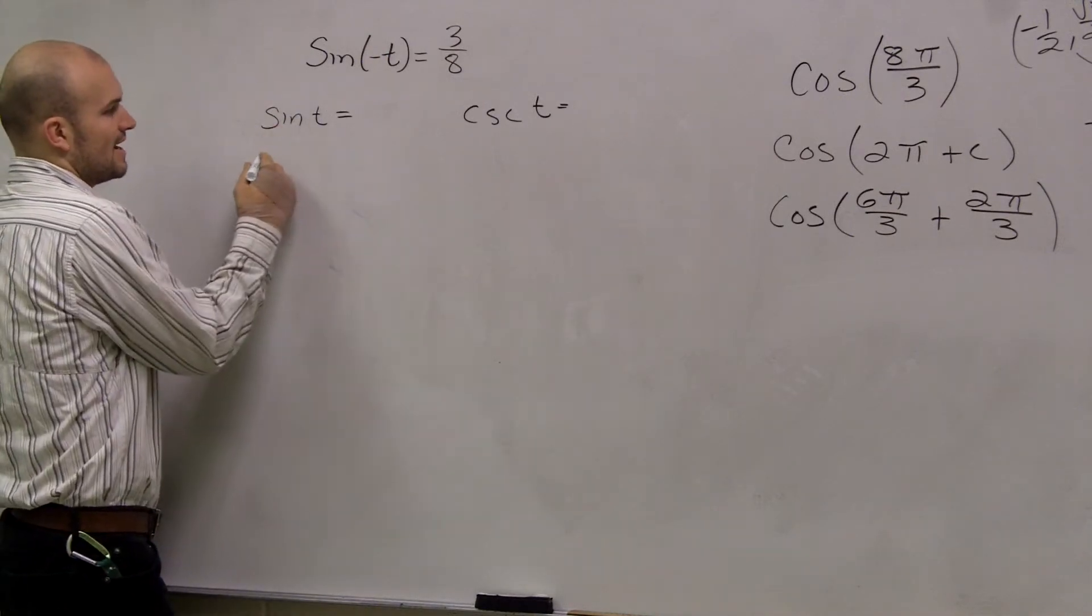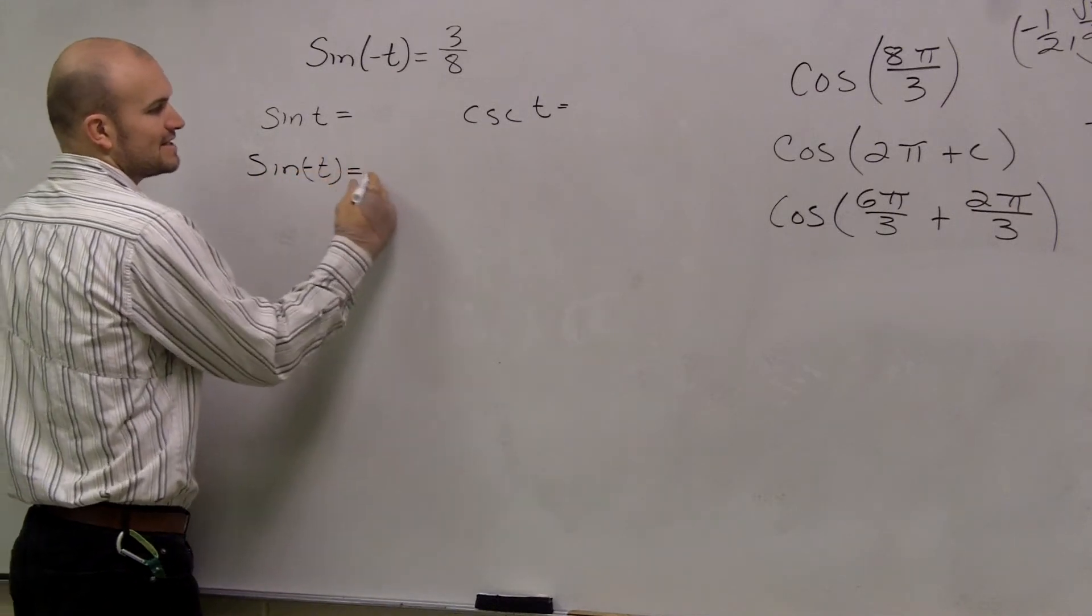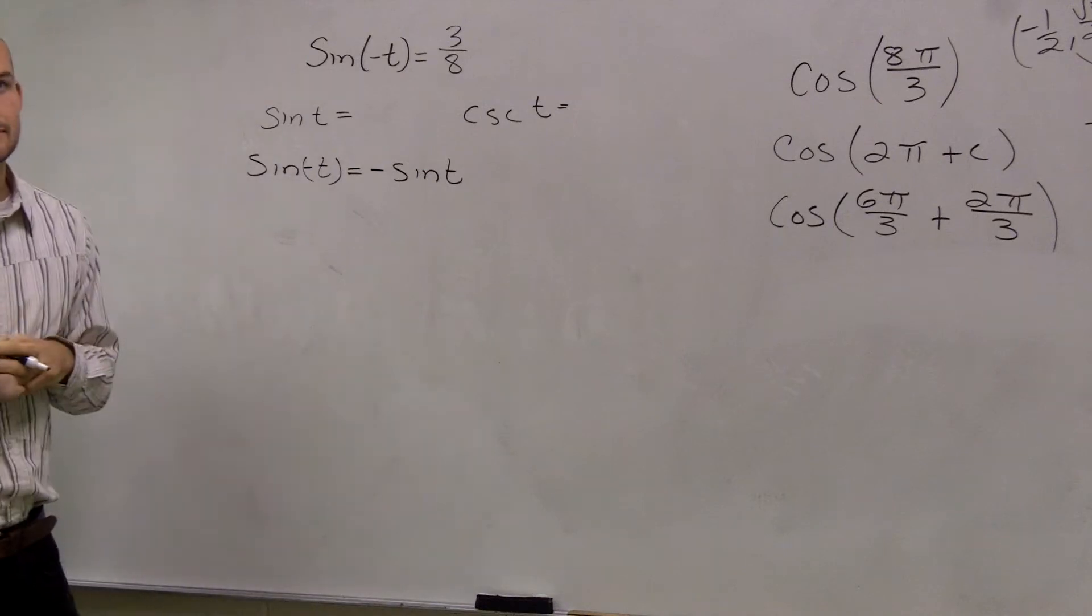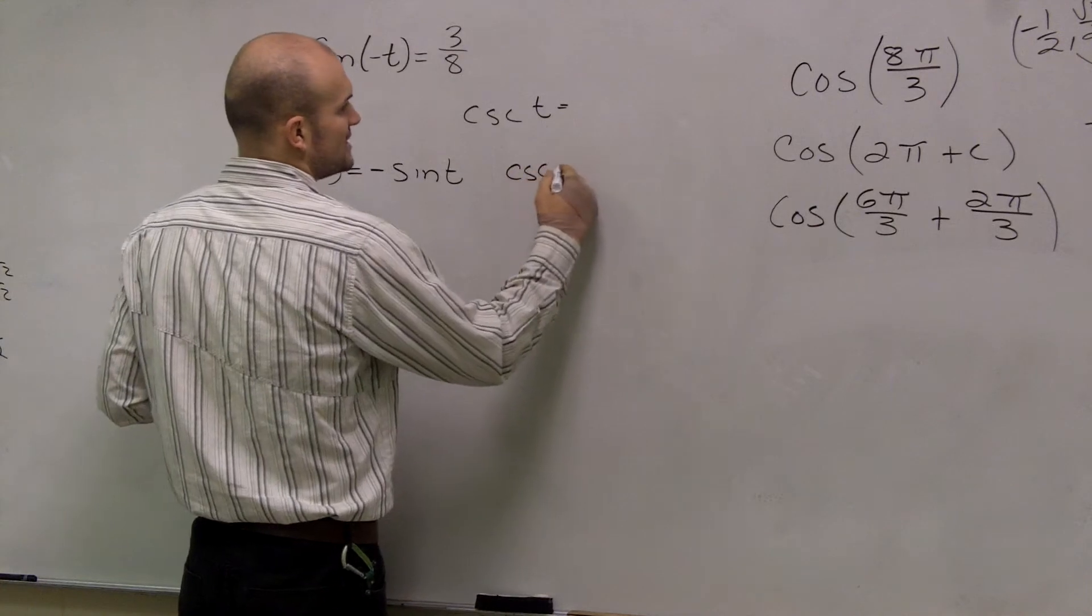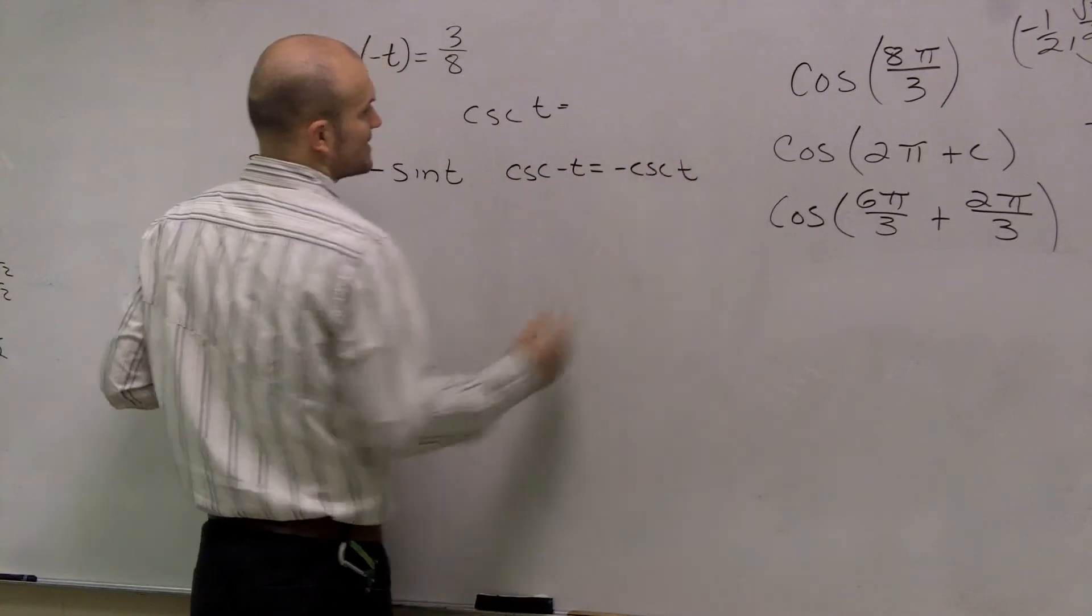Well, they say that if I have the sine of negative t, that's equivalent to negative my sine of t. And that's actually the same thing for cosecant. If I have cosecant of negative t, that's the same thing as a negative cosecant of t.